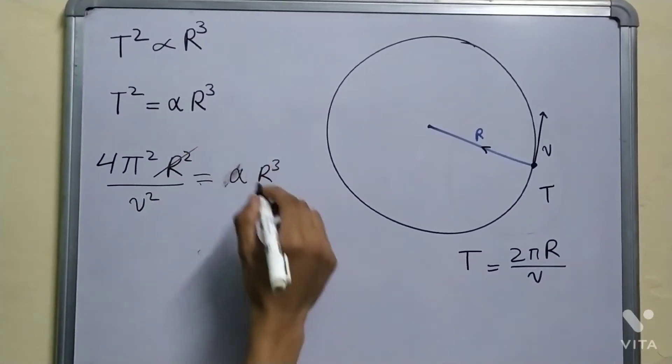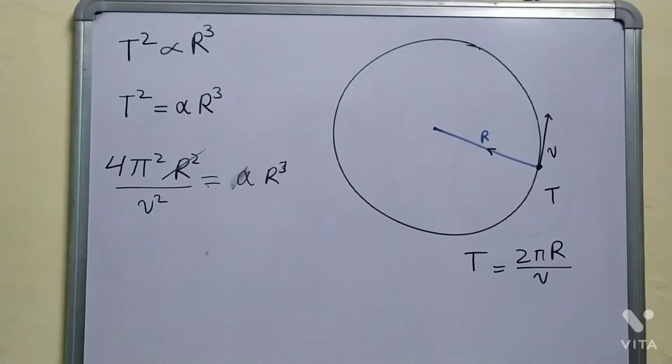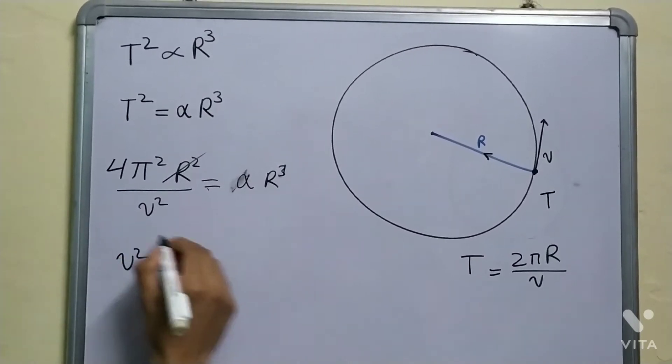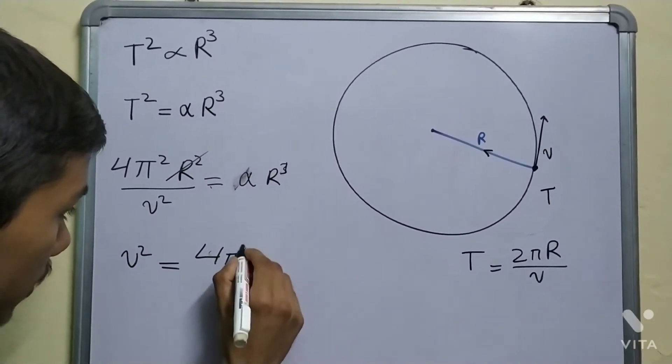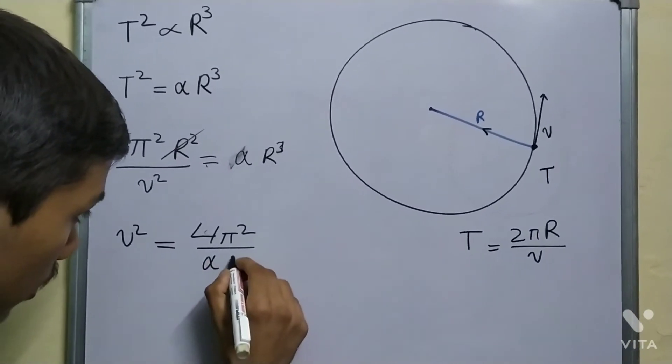And now this cancels out, we are left with only one r on our right hand side. So from this we get v² is equal to 4π² upon alpha r.